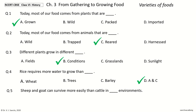Question 5: Sheep and goat can survive more easily than cattle in dash environments. The options are: dry, hilly, A and B, tropical. Your time.